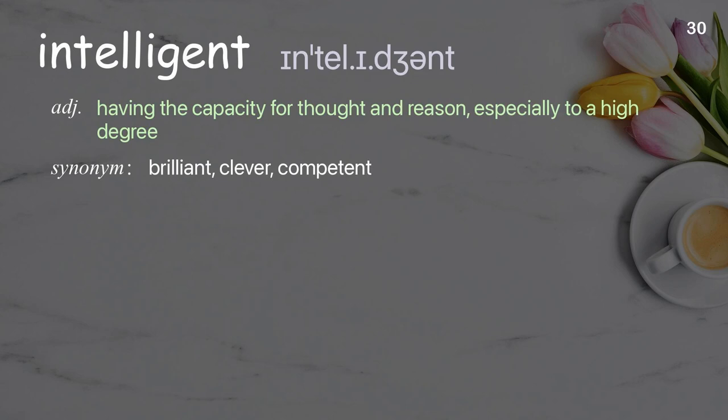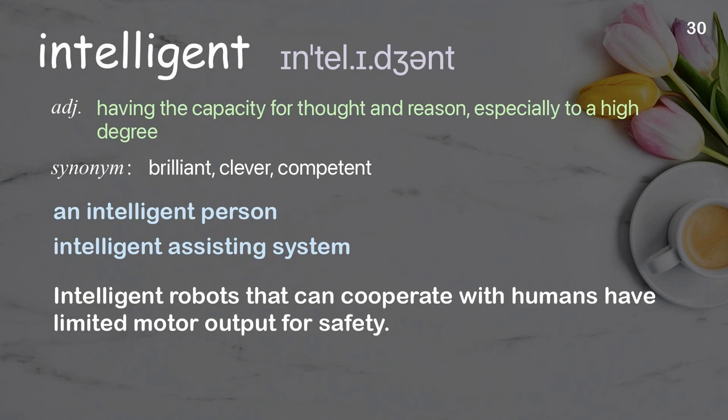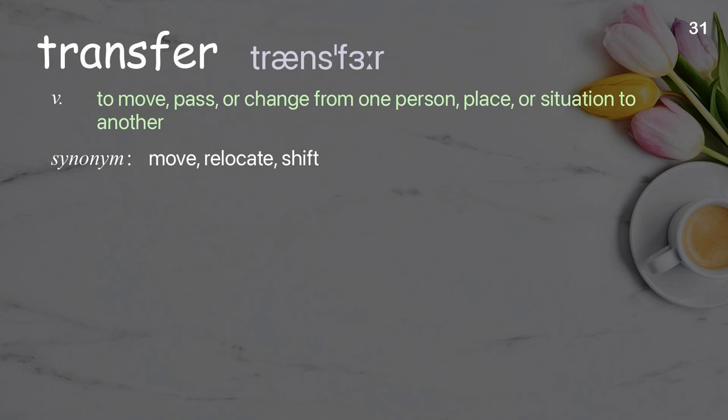Intelligent: Having the capacity for thought and reason, especially to a high degree. Examples: an intelligent person, intelligent assisting system. Intelligent robots that can cooperate with humans have limited motor output for safety.